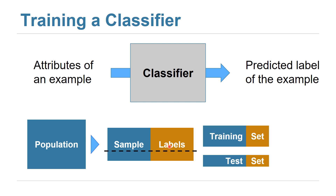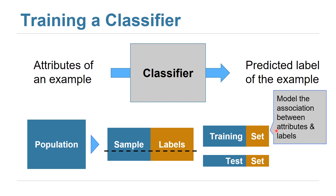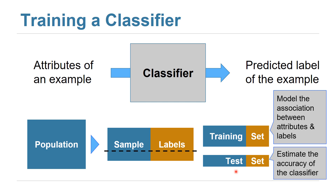We take this sample and split it into two parts: one we call the training set and the other we call the test set. The training set is used to find patterns in the data, or to build and train a classifier — a model that will help us predict the labels for future examples. The test set is used to estimate the accuracy of the classifier, as we will see in this lecture.